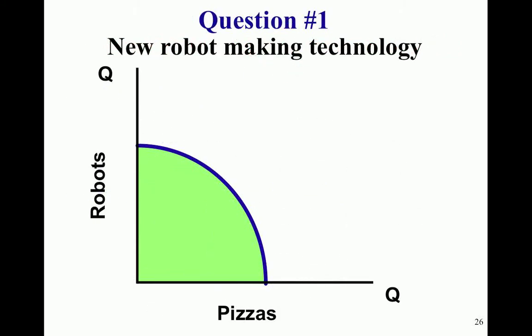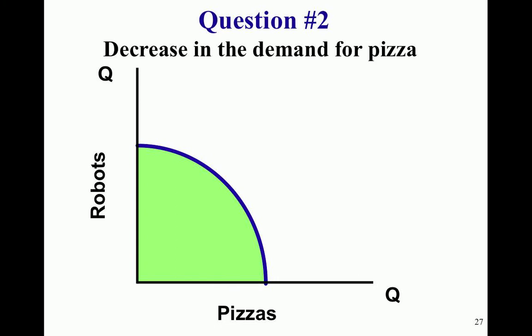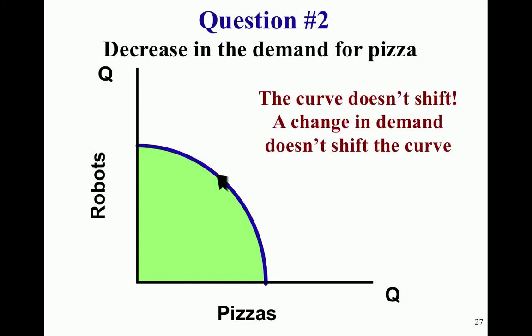Answer one — new robot-making technology — should show a shift out for robots on the PPC. Answer two — a decrease in demand for pizza does not shift the line, it just changes the priority. It's a movement along the PPC because it's a change in society's preferences. A decrease in demand for pizza changes the societally optimal level of pizza, moving from one level down to another along the curve.